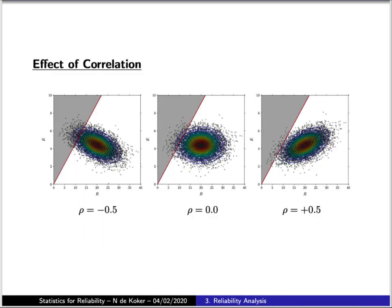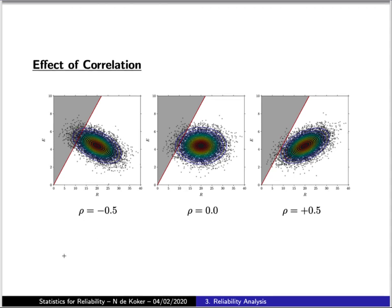We should also consider the effect of correlation on the probability of failure. In real space, correlation can push areas of larger likelihood into the failure region, or have the opposite effect of pulling areas of high likelihood out of the failure region. The case with positive correlation will have a lower beta value than our reference uncorrelated case, while the case with negative correlation will have a higher beta value.